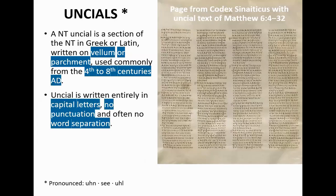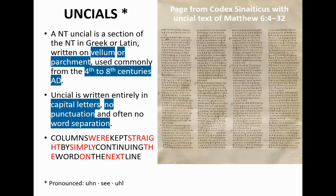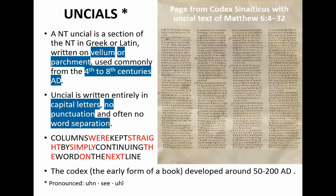Uncial basically means it's all in capitals. This will give you new respect for some of the translators — there's no punctuation and often no word separation. The columns were kept straight by simply continuing the word on the next line. When they talk about a codex, all it means is an early form of a book, developed around 50 to 280 AD. So whenever they talk about an uncial codex, it means a codex written in that format.